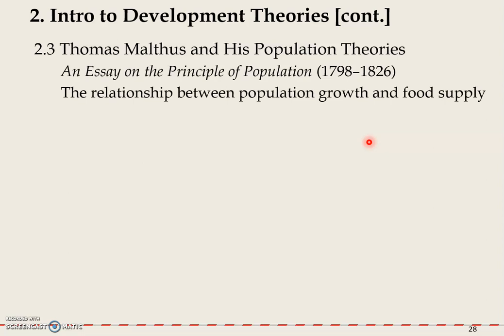His study focused on the relationship between population growth and food supply. He said that food supply increases arithmetically — meaning it goes from 1 to 2 to 3 to 4 to 5. And if you recall the law of diminishing returns we discussed in the previous video, the actual growth of food supply could be even slower than that — going from 1 to 2 to 2.5 to 2.75, and so on.